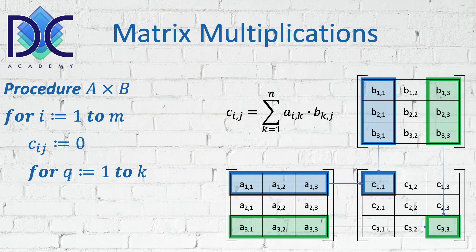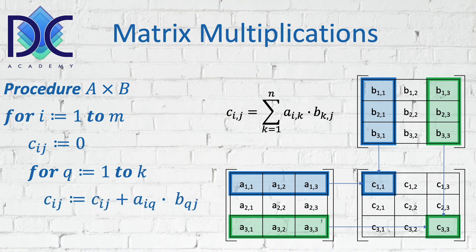Then we go from q from 1 to k—that's the second part, this is about the columns—and then we say that the Cij, we add to the previous one the different multiplications.